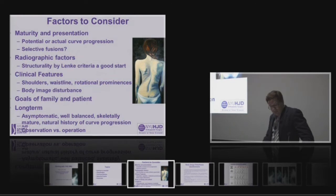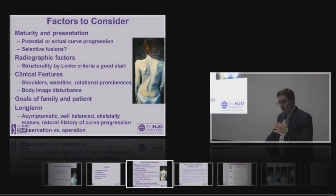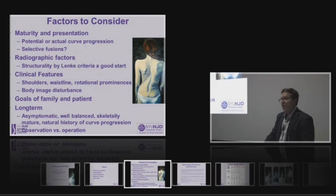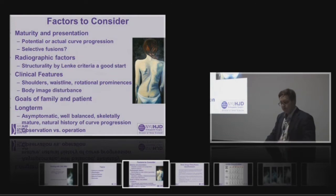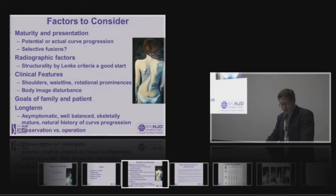One of the things we assess when looking at patients is their maturity and how they present — whether their curves are progressive or the potential for curve progression based on skeletal maturity. If they're mature and they have a double curve you may consider a selective fusion versus if they have significant growth remaining where you may be more likely to address both curvatures.